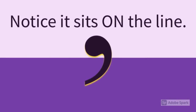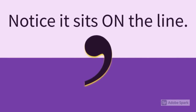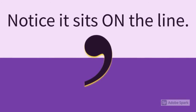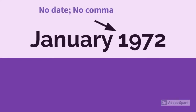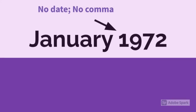This is a comma. Notice that it sits right on the line — it doesn't hover up in space. Notice in this example that there's no day, so there is no comma either. Because the comma separates the numbers of the day from the numbers of the year — here there wouldn't be any confusion.